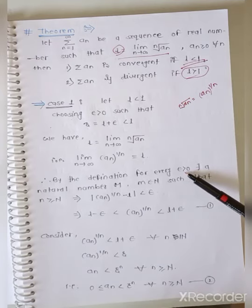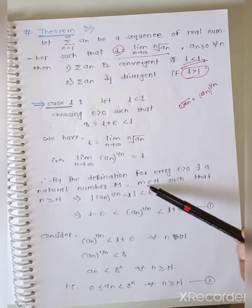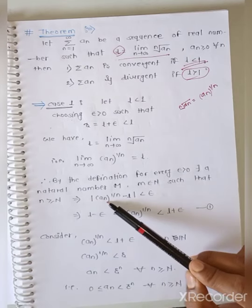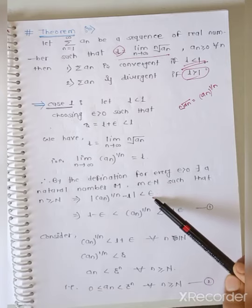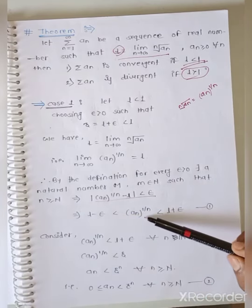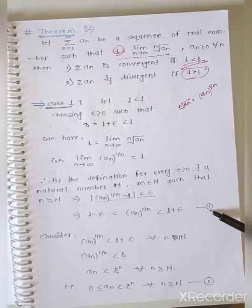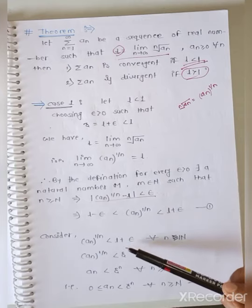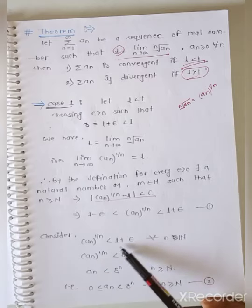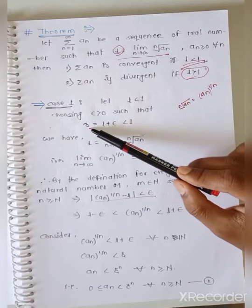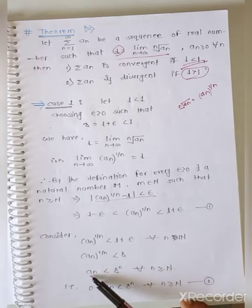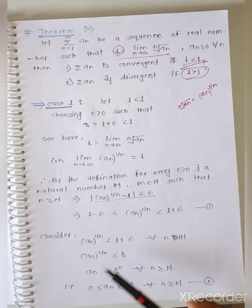By the definition of limit, for every epsilon greater than 0 there exists a natural number M such that for n greater than or equal to M, mod of a_n to the power 1 by n minus L is less than epsilon. This gives L minus epsilon less than a_n to the power 1 by n less than L plus epsilon — equation number 1. Consider a_n to the power 1 by n less than L plus epsilon for all n greater than or equal to M. Let R equal L plus epsilon.